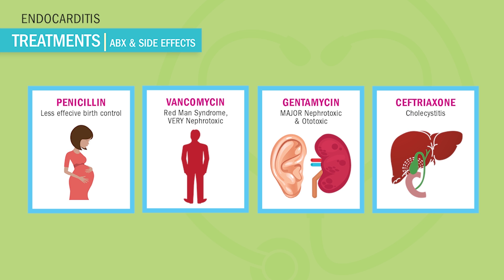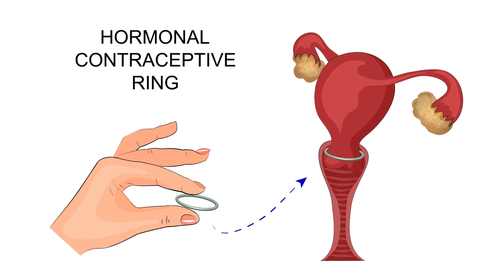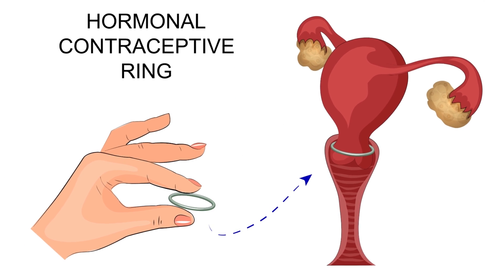Our first antibiotic of choice is usually penicillin, but a bad thing about this is that a lot of patients have allergies or drug resistance to the penicillin family. Penicillin can cause less effective birth control by bumping the pill, causing accidental pregnancies. So remember: P for penicillin, P for pregnancy accidentally. It basically deactivates the pill. For patient teaching, tell them to use an alternative form of birth control — since it deactivates it, do something else like the NuvaRing.